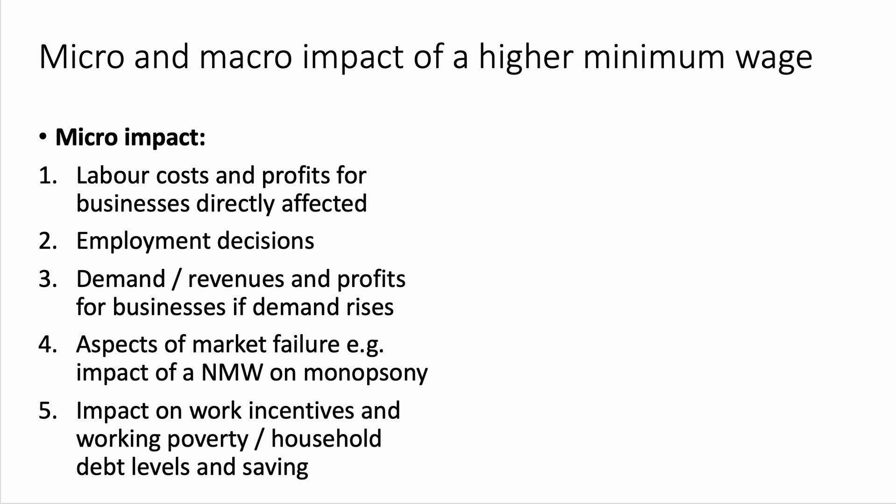It's very good to link a minimum wage micro impact to a market failure. So you could go to the labour market failures and think about the possible impact of a minimum wage on monopsony power. Micro economics is also about thinking about the individual worker — consider for example the work-leisure trade-off, the impact on work incentives or working poverty which is very topical at the moment, the impact on household debt and exposure to high interest rates and the ability to save out of income. Micro economics is just zooming in on the impact on individuals, businesses and markets.